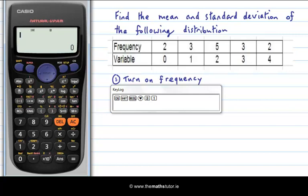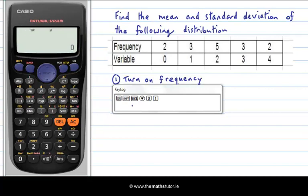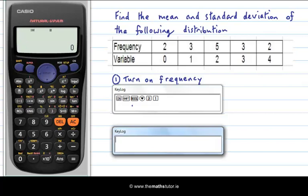So here you see I have labelled this turn on frequency. That is the first thing to do. Now that we have our frequency turned on we can then go and enter our data. So the next step is to go mode, two for stat,